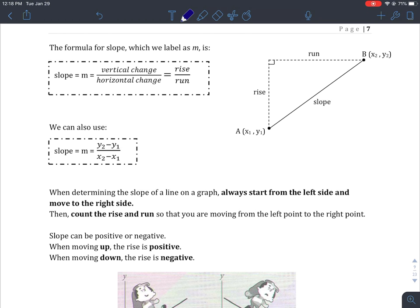The formula for slope, which we label as m, is the ratio of vertical change to horizontal change - rise and run. The same formula can be written as m = (y2 - y1) / (x2 - x1), just like we did in the previous video.